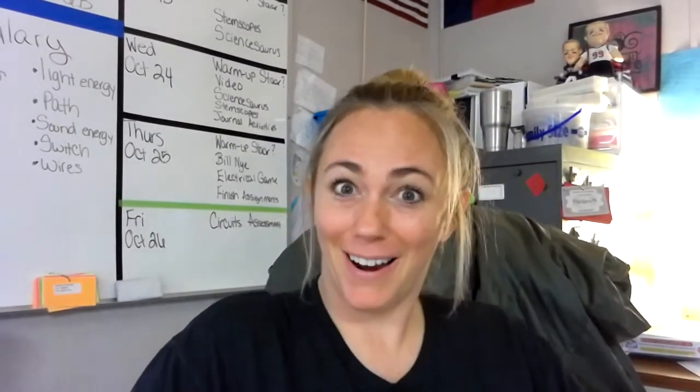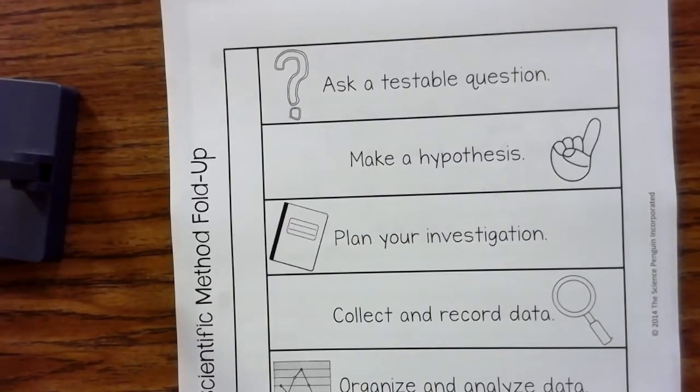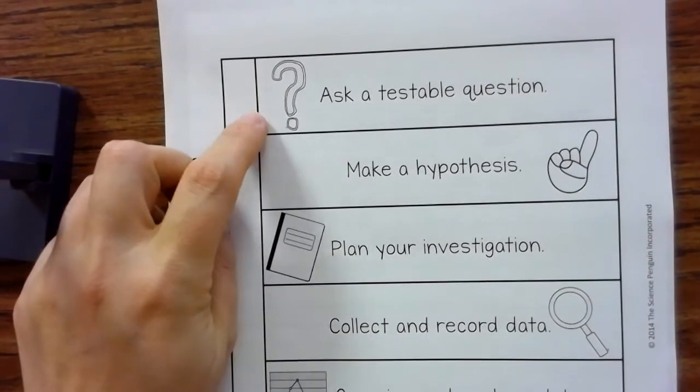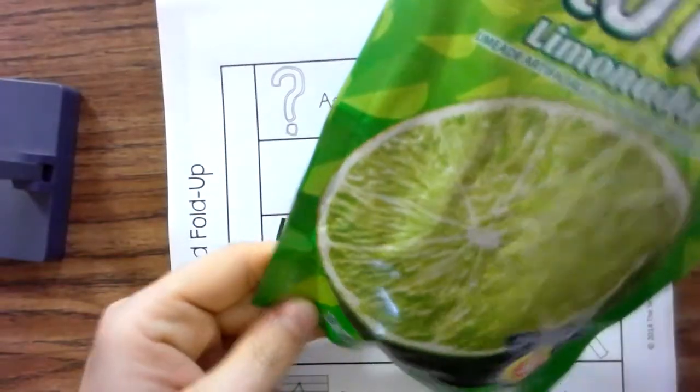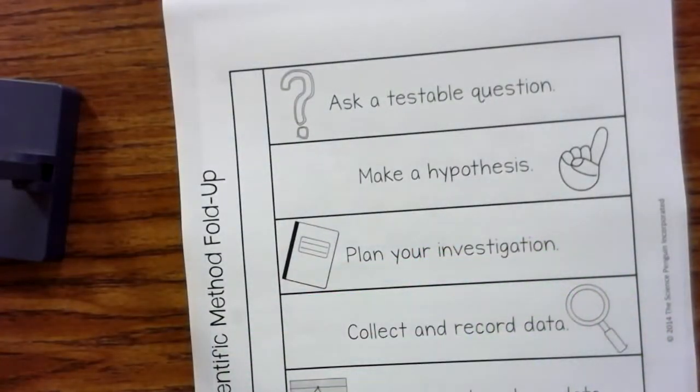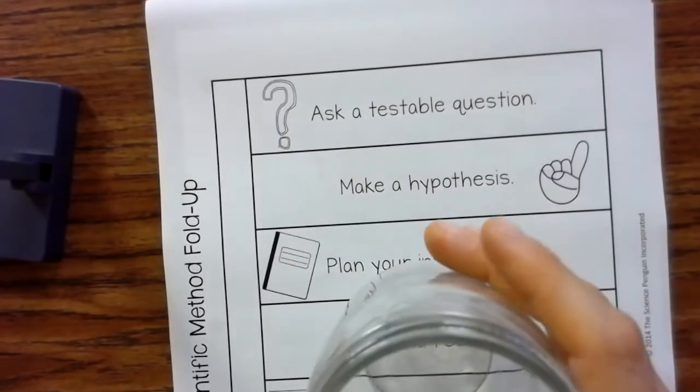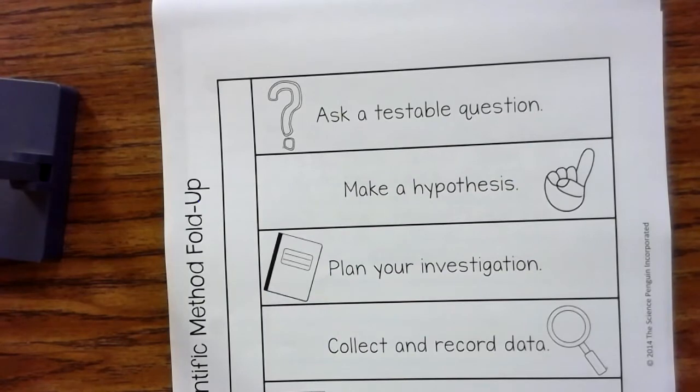All right, so let's get started. I just want to point out that whenever you want to test out anything in life, it doesn't have to just be in science, but there are basic steps you should always follow. First, you want to ask a testable question. So what we're going to test today is if this drink powder mix, when poured into this filter with water over this glass, will it make Kool-Aid or not? That's our question.